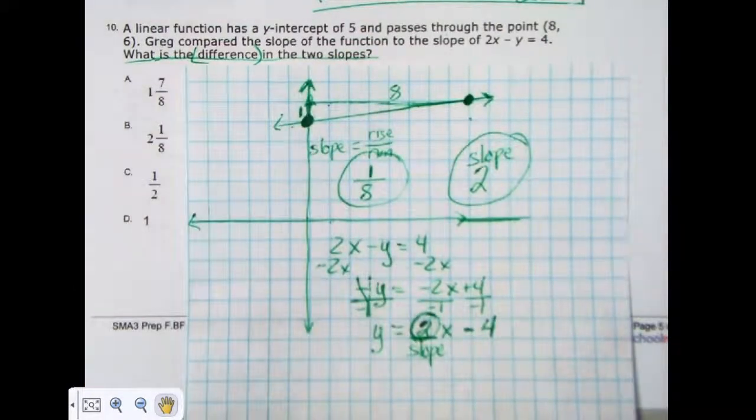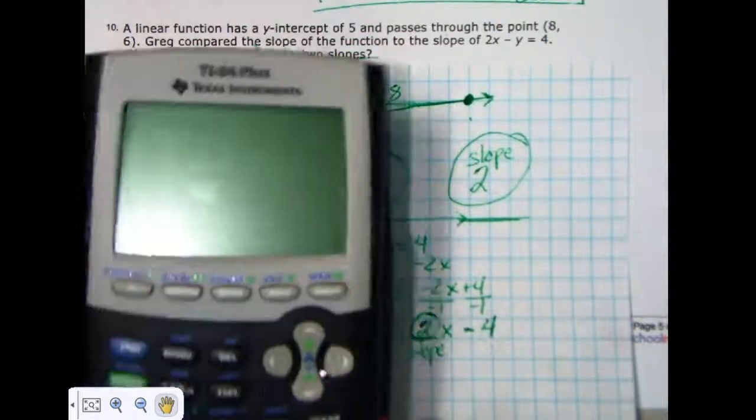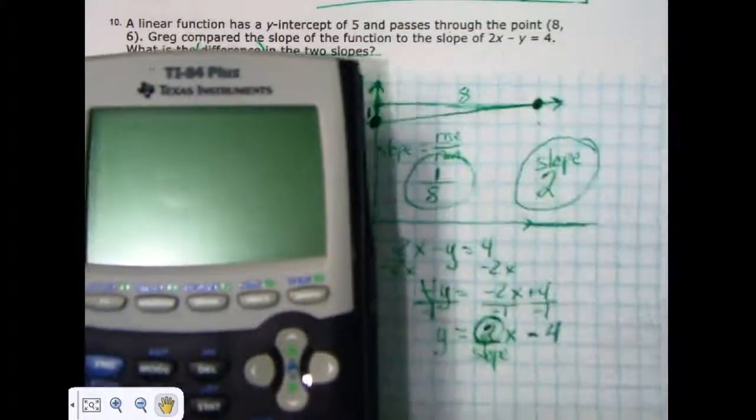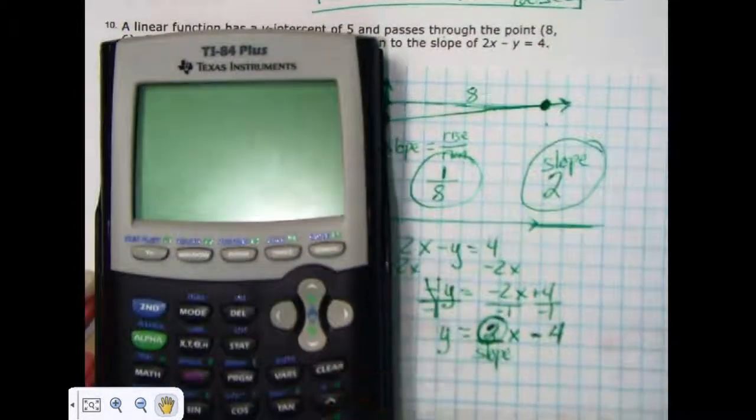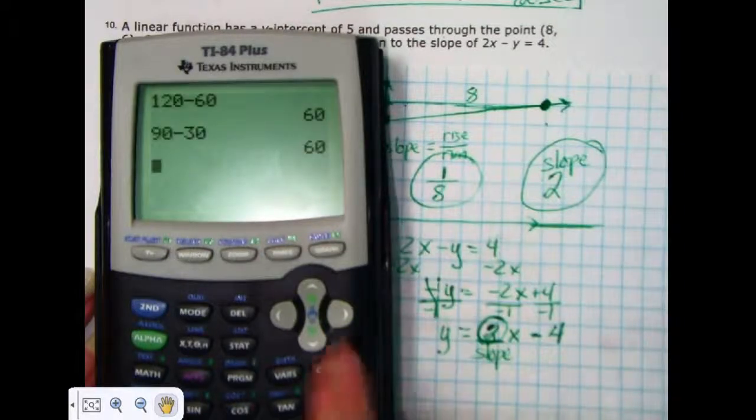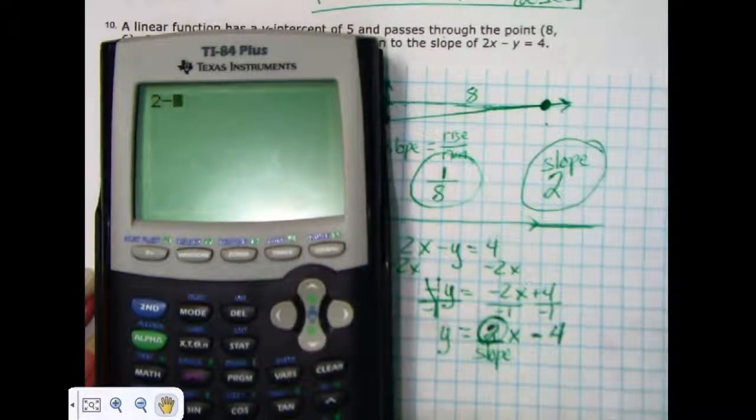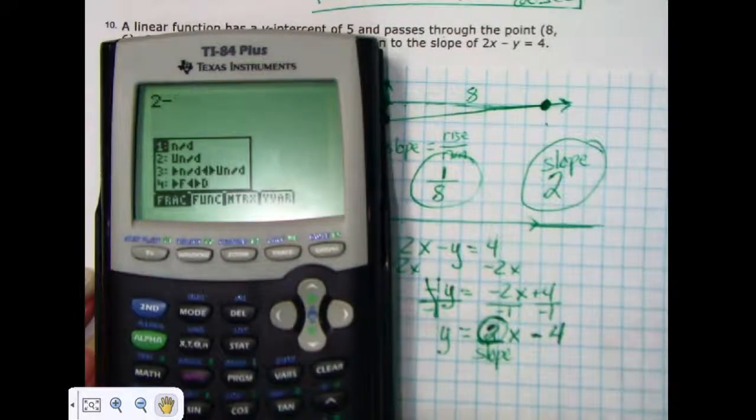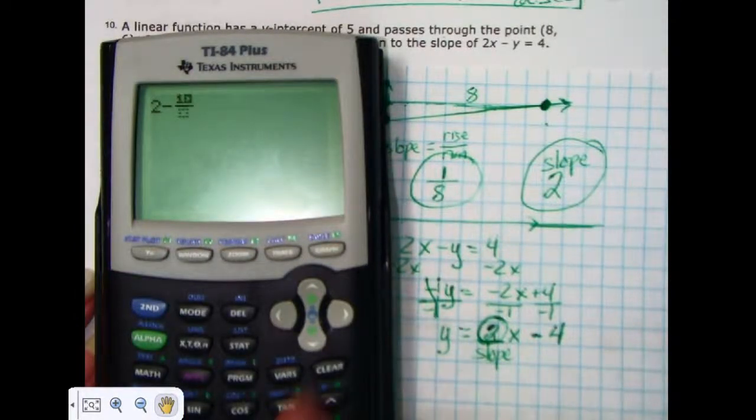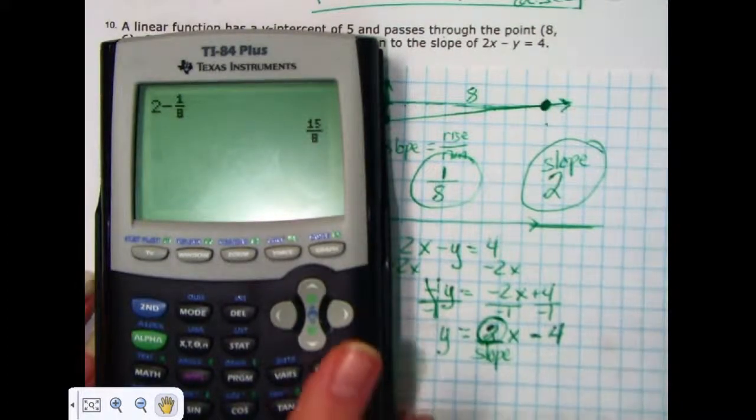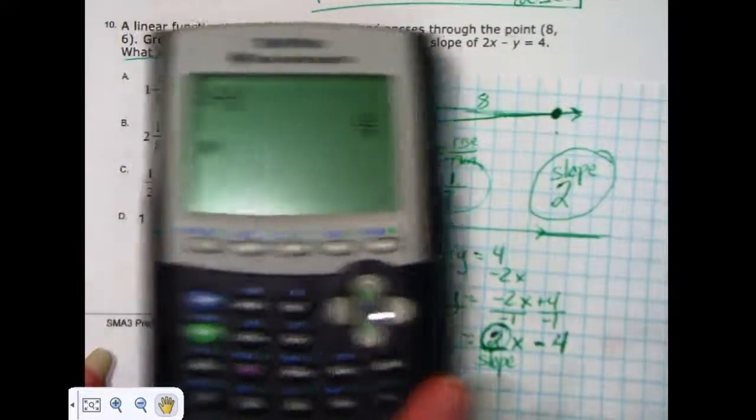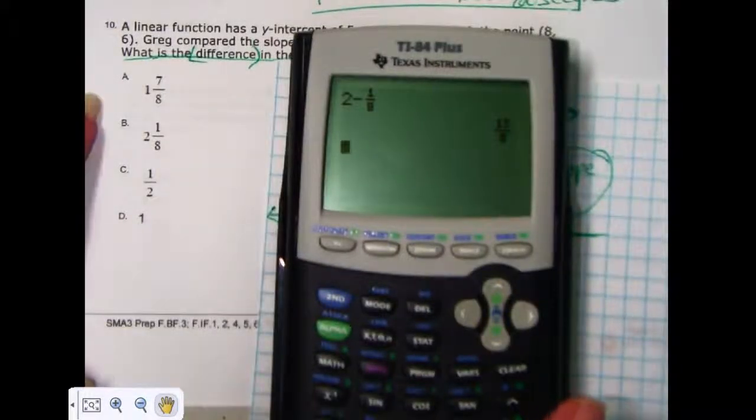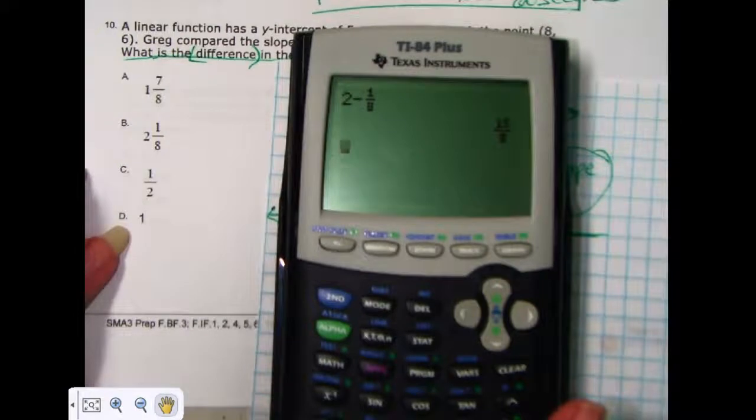So, I pick up my handy-dandy calculator, and when I subtract these, I'm going to start with the highest slope. And so, I want to subtract. I'm going to do 2 minus alpha y equals, for that fraction, 2 minus 1/8. The answer I get is 15 over 8, which doesn't match exactly any of these answer choices.